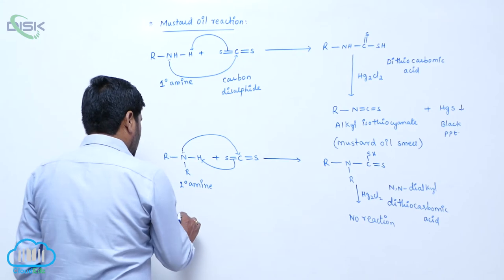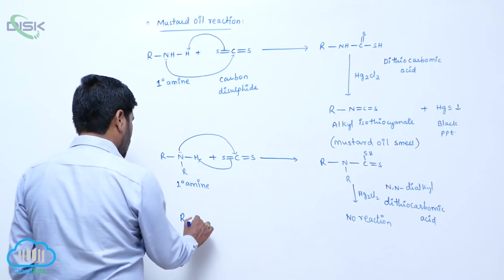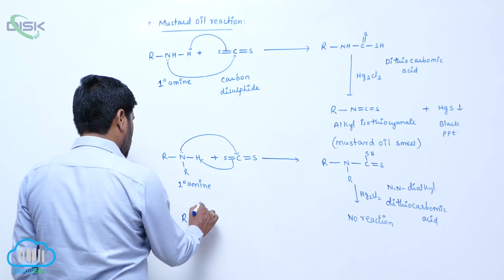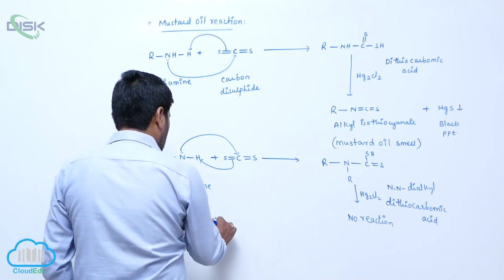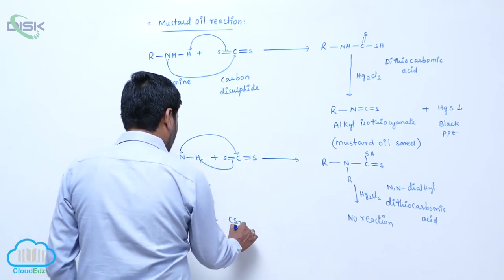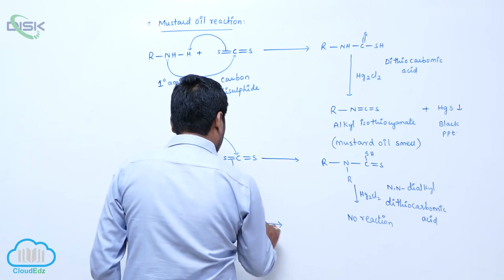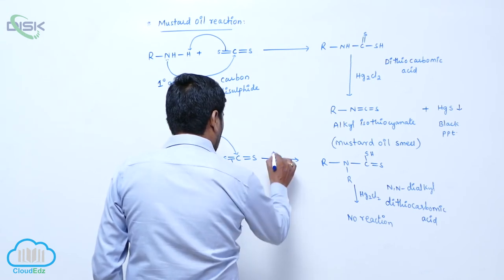Then tertiary amine, R-N, here is R. When tertiary amine reacts with carbon disulphide,